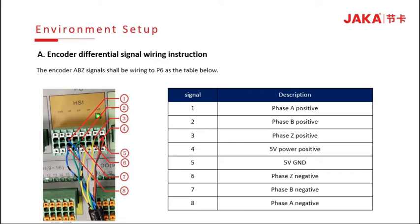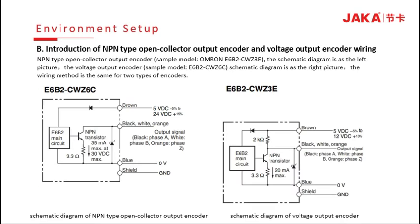For encoder differential signal wiring, the related signals of the encoder should be wired as shown in the picture and table below. Pin 1 to 8 connects to the phase A, B, and Z positive and negative. Pin 4 and pin 5 connect to the 5V power supply positive and ground separately. The second type is the NPN type, open collector output encoder and the voltage output encoder.